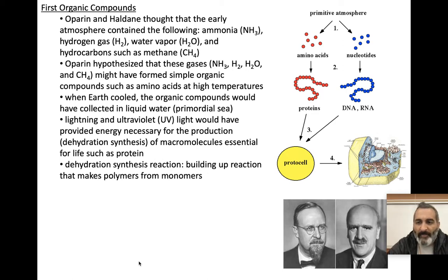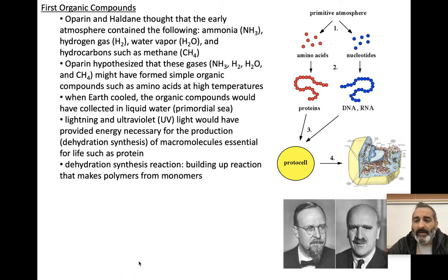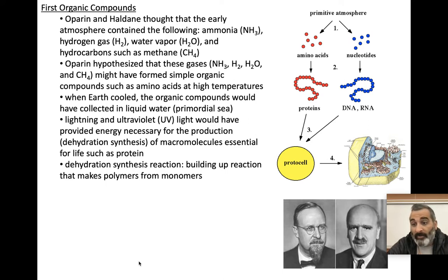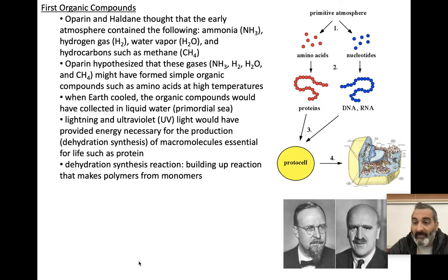Let's talk about the first organic compounds on our planet. Everyone always wonders how did life begin? What were the first cells? How did the first cells form? We don't know exactly why. But a few people came up with some ideas and hypotheses as to how organic molecules could form on our planet. Organic molecules are the molecules of life. Before you have cells and before you have life, you need to have organic molecules. You can't have life without organic molecules.